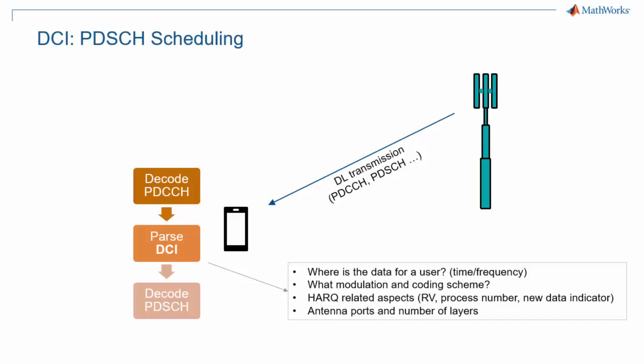Let us now look at two concrete examples of DCI usage. First, for downlink data scheduling. The UE looks for the PDCCH, and if a match is found, meaning that a block decoded with a CRC that matches the RNTI of the UE, it parses the DCI and extracts all information about where in time and frequency data is located.